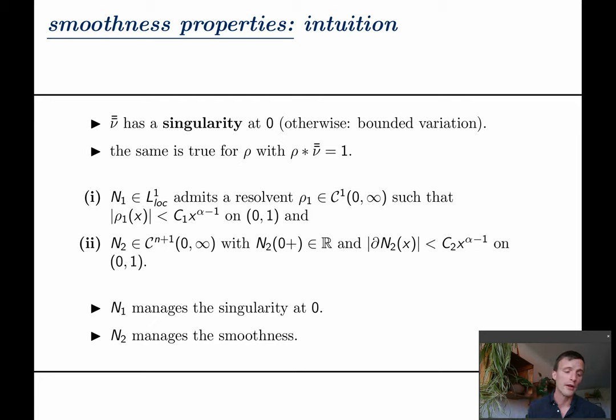First observe that double bar ν has a singularity at zero otherwise the process would have paths of bounded variation and the same goes for the resolvent ρ. Now these are the two conditions on the two components of double bar ν and if we look closely we see that N₁ has a nice resolvent.